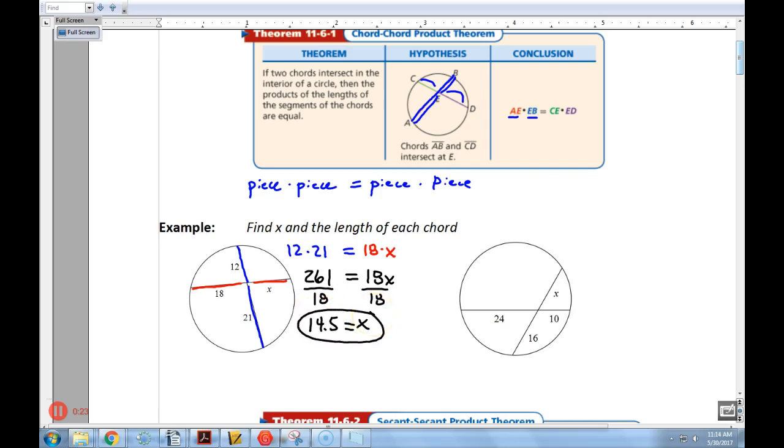Now that's x, and if we wanted to find, because the directions actually say, find the length of each chord, the blue chord would then, well the blue chord's pretty easy, because I already have both those numbers. I just add up 12 plus 21, that one is 30, or actually the blue chord should be 33. And then when we do the red chord, the red chord is 18 plus 14.5, so that one's going to be 32.5. Now notice the lengths of the chords do not have to be equal. The lengths are different. Sometimes you have a long chord and a short chord, but when you multiply their pieces, it ends up being the same.